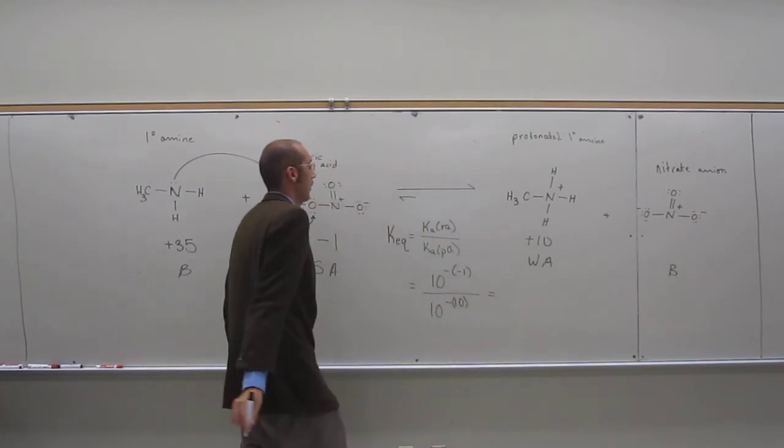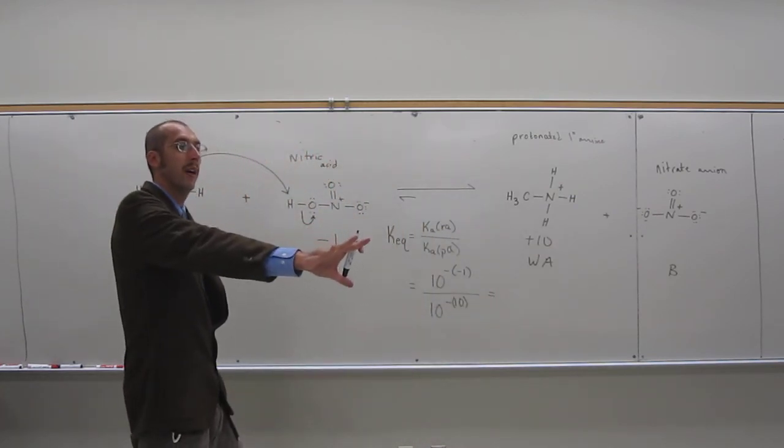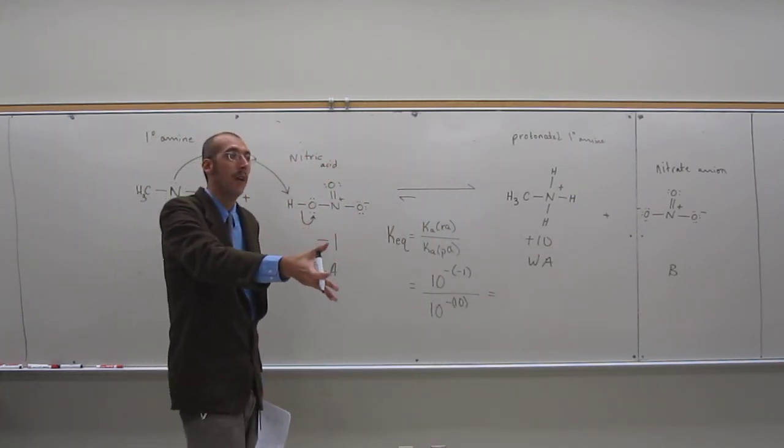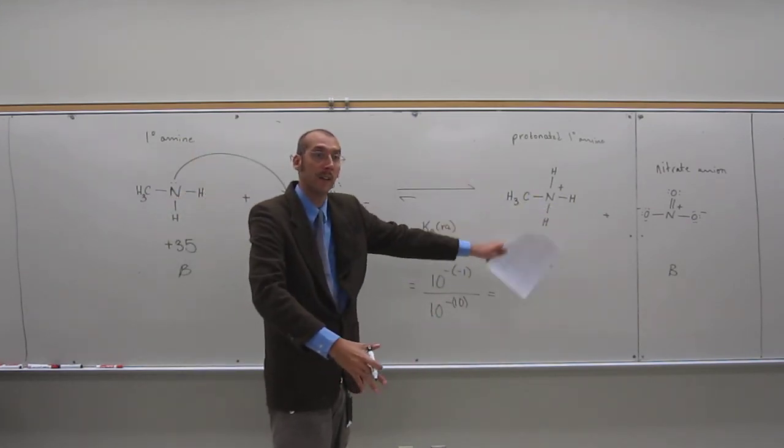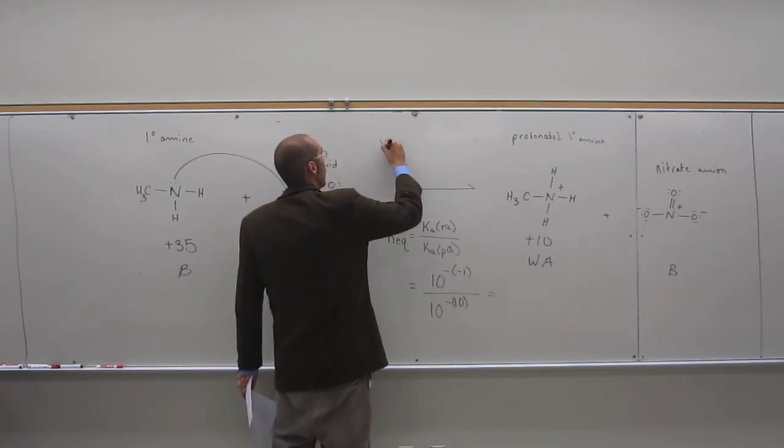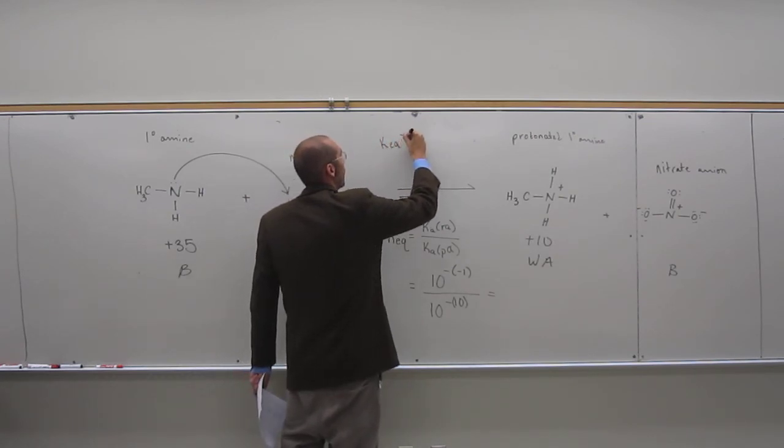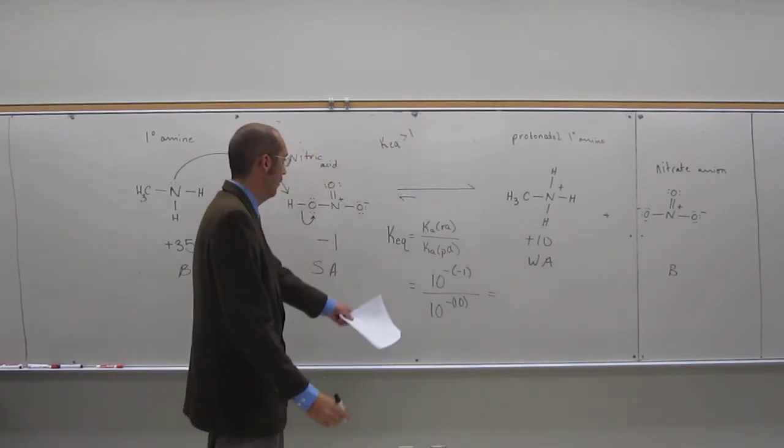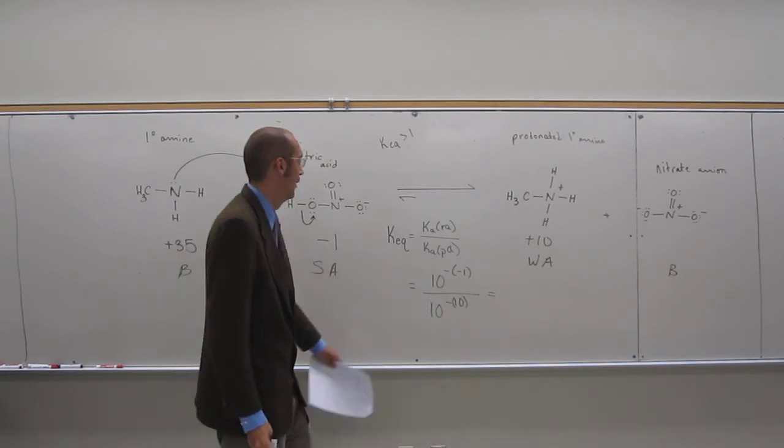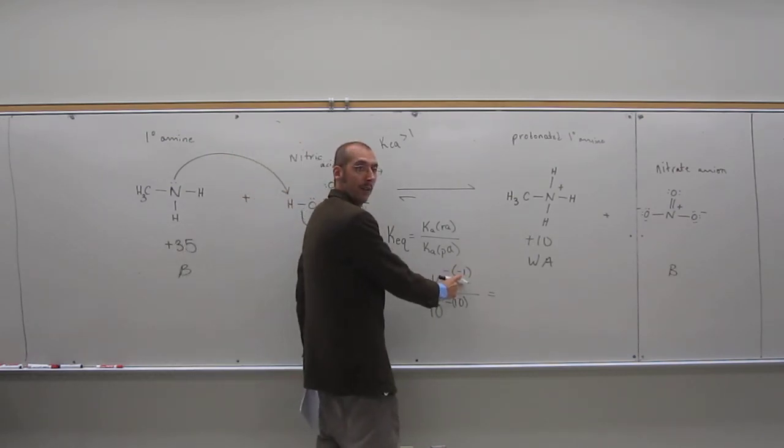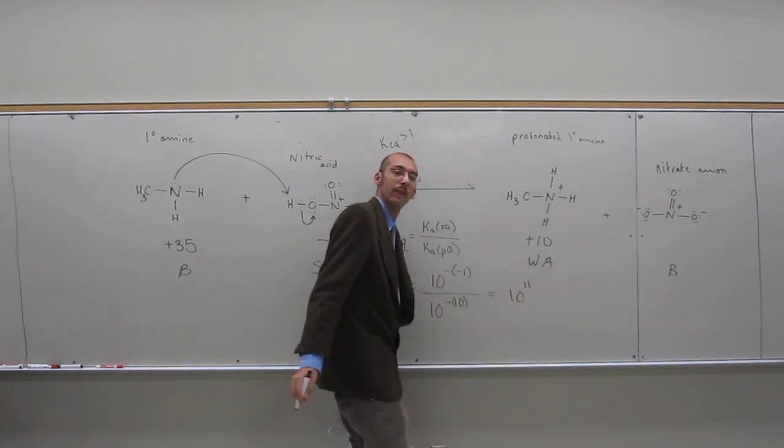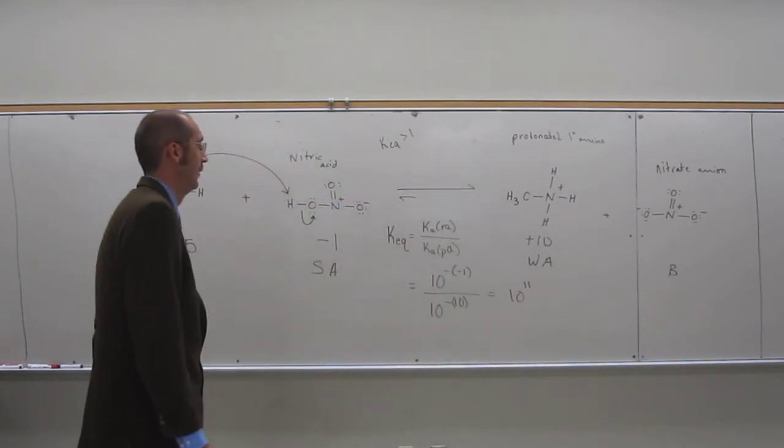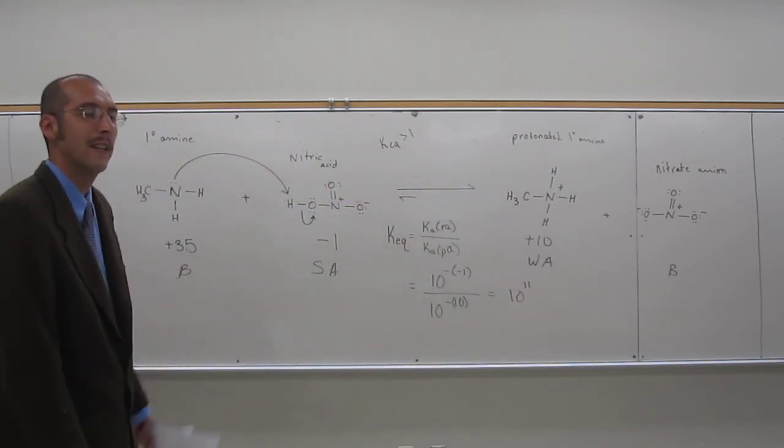So, what's the Keq? Would you expect it to be bigger or less than 1? Bigger, why? Because the arrow is going towards the product. So, Keq, we would expect it to be bigger than 1. Is it bigger than 1? Yes. You guys know how to do this? That's going to be 1, right? Negative is on the bottom, it goes up to the top. So, it's 10 to the 11th. That's how you do it.